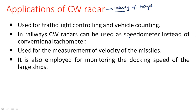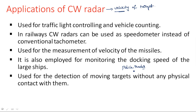Police radars also use CW radar. The purpose of police radar is to find the speed of a vehicle in a speed limit zone — for example, in an 80 km/h zone on a highway, if a vehicle exceeds that limit at 90 km/h, the police radar immediately detects the speed and a fine is imposed. This CW radar is used for detection of moving targets without any physical contact with them. These are the main applications of CW radar, along with the IF Doppler filter bank used in CW radar.